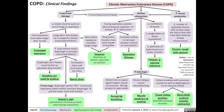Airflow obstruction is the second main pathophysiological consequence of COPD. Because of airflow obstruction, during expiration, positive pleural pressure will squeeze on the airways and worsen the airflow obstruction. As a result, the respiratory muscles must work harder to breathe, giving the patient a sensation of dyspnea, or shortness of breath.